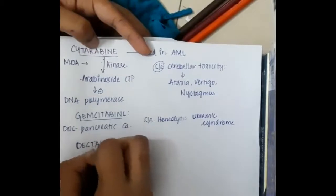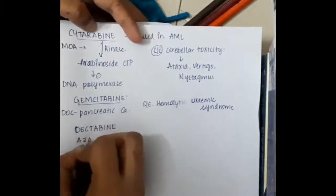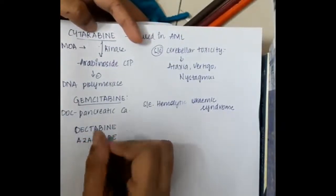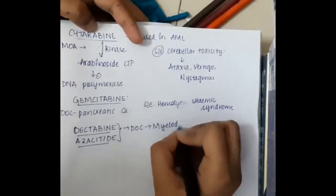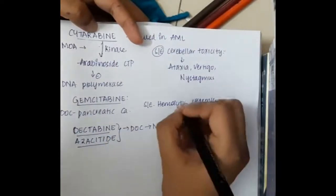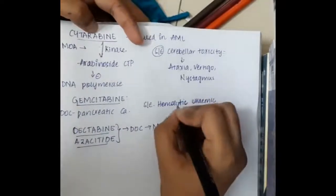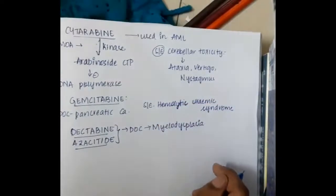Decitabine and azacitidine are both used as drugs of choice for myelodysplasia.